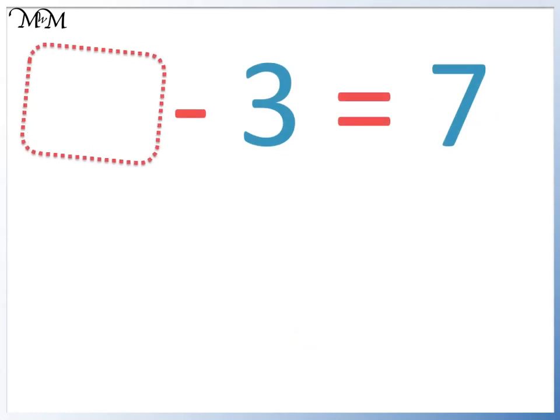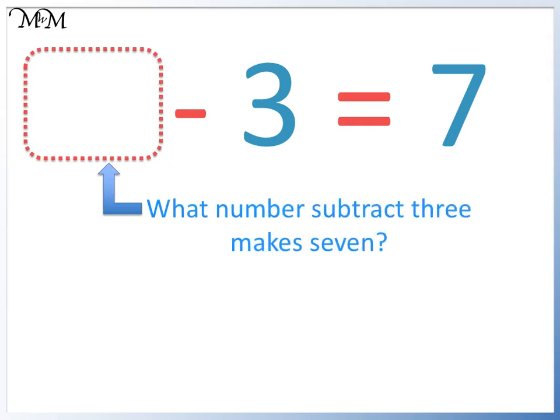Here we need to work out which number subtract 3 makes 7. We can start at 7 and add 3 more. This will help us to find our largest number before the subtraction sign. We get 10.